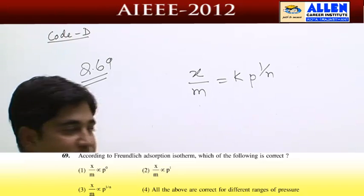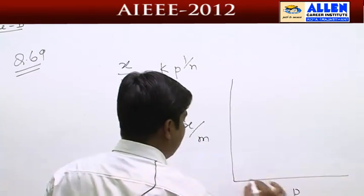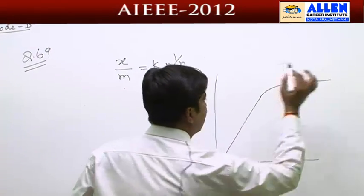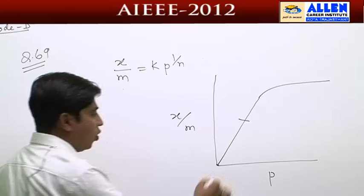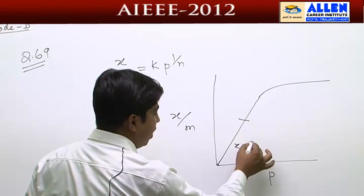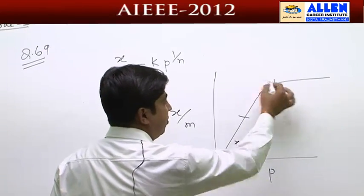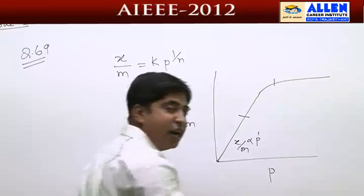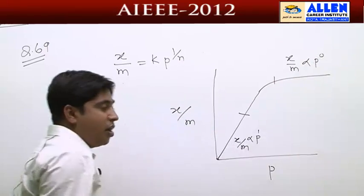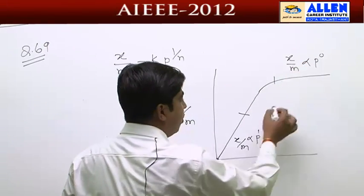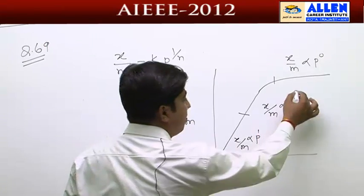Let us explain this with a graph. We plot x/m against p. From the graph we can see that the data is almost a straight line. So x/m is proportional to p^1. Looking at the intermediate step in the graph, the line becomes constant — so x/m is independent of pressure. The value of 1/n here ranges from 0 to 1, so x/m is directly proportional to p^(1/n).